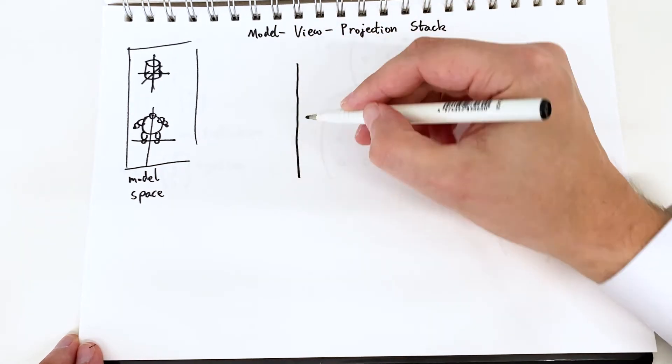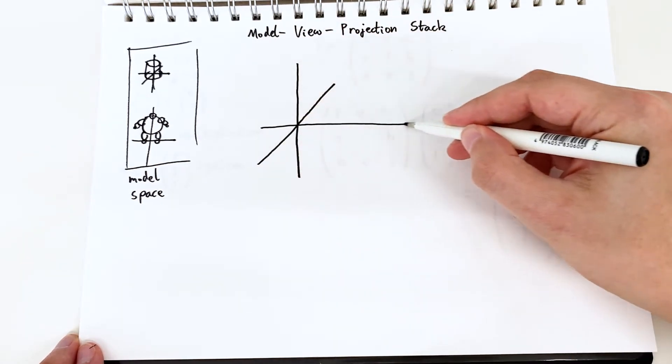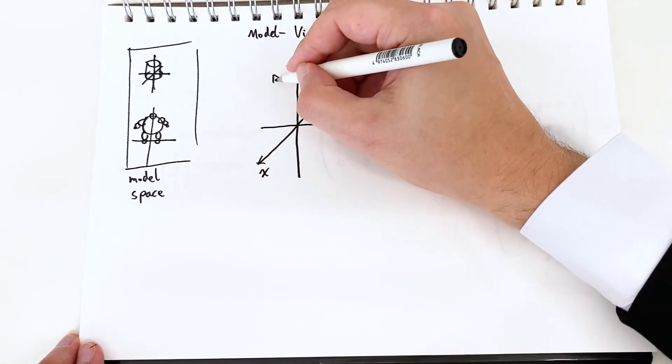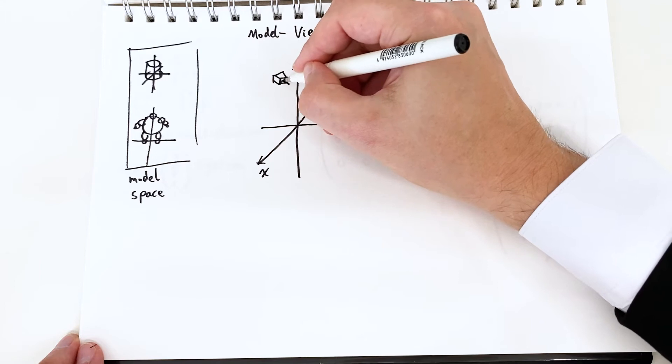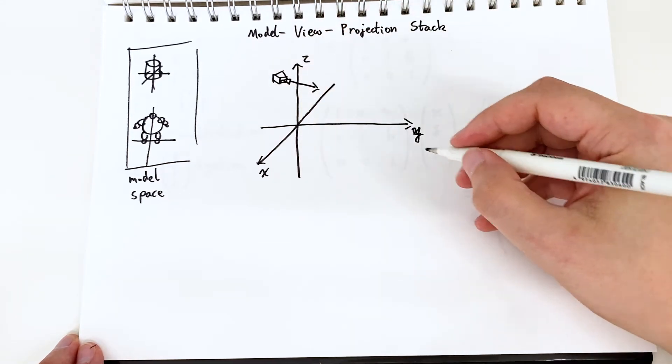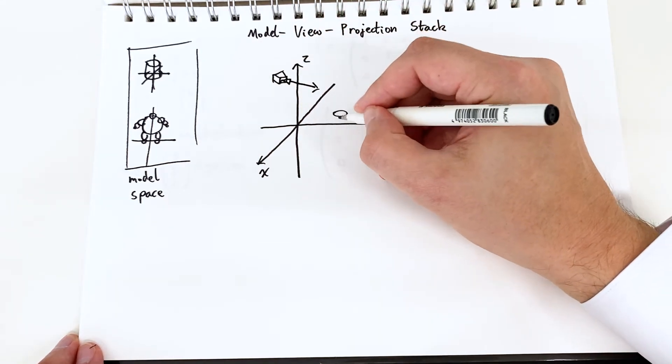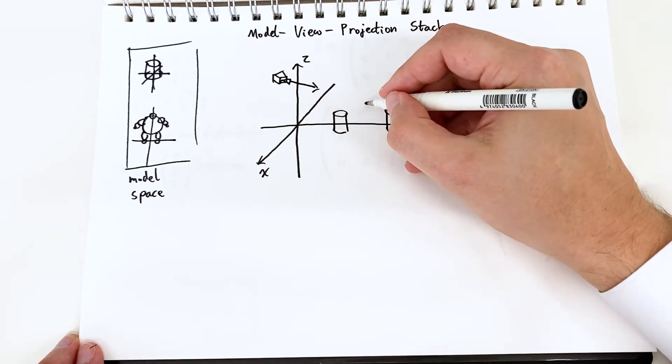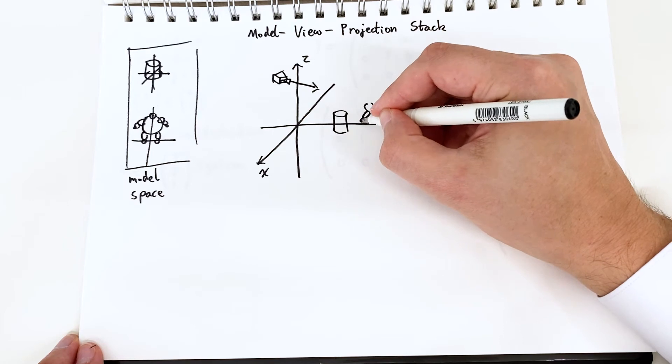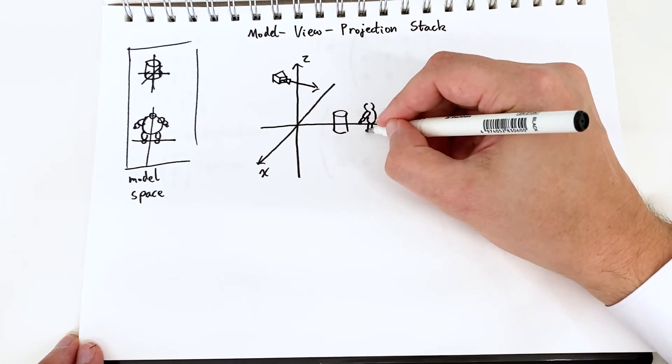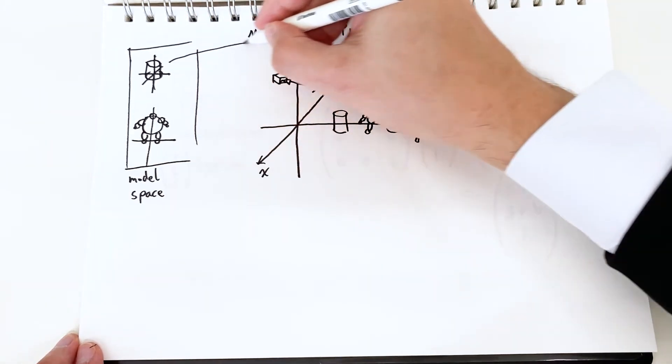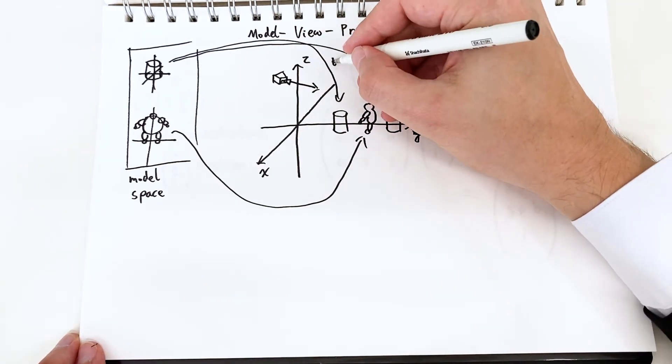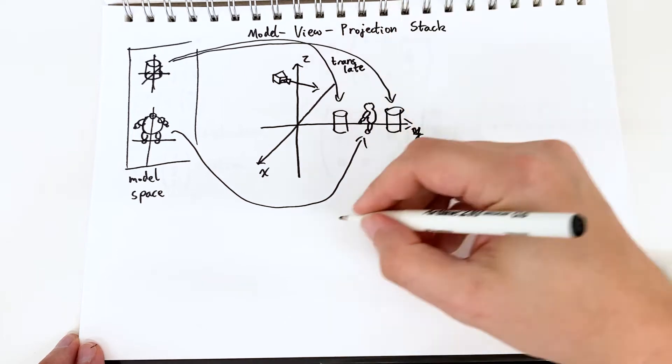Now we want to put them out into the world somewhere. So for instance we might want to put our cylinder and draw it in two different locations. Well we'll need to transform it. We'll need to translate it using two different translation matrices. For the person we're first going to rotate them around their origin so they're facing the right way and then translate them into the world. This transformation is called a model transform and this sends the objects to world space.